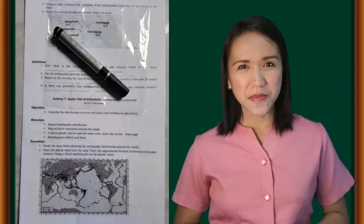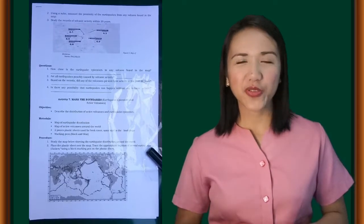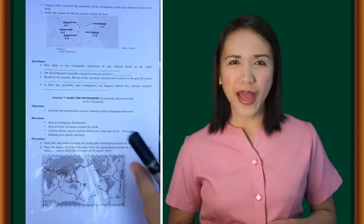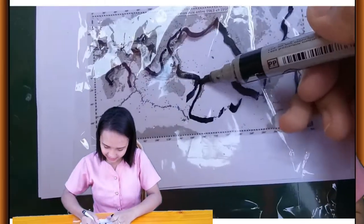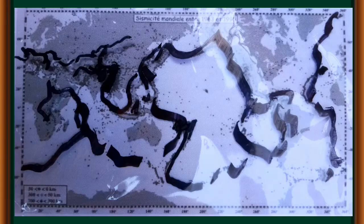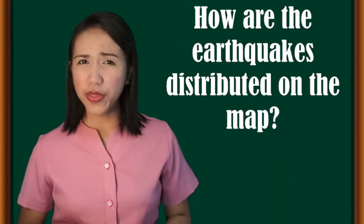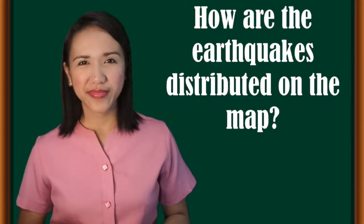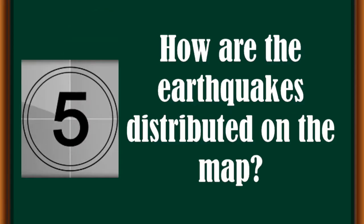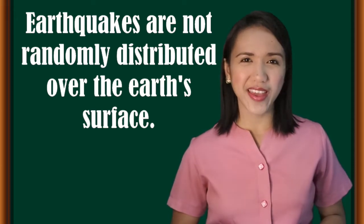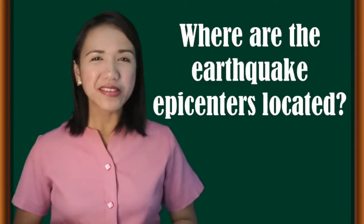Let's begin. Study the map showing the earthquake distribution around the world. Place the plastic sheet over the map and trace the approximate location of several earthquake clusters using a black marking pen on the plastic sheet. Guide question: how are earthquakes distributed on the map? Answer: earthquakes are not randomly distributed over the Earth's surface.